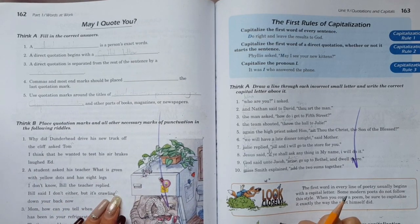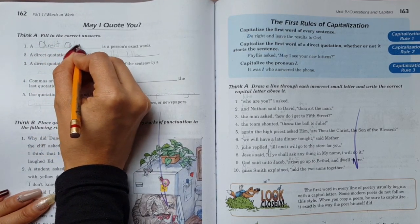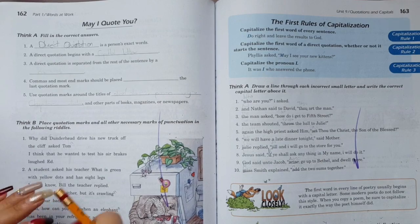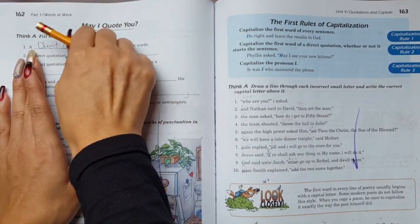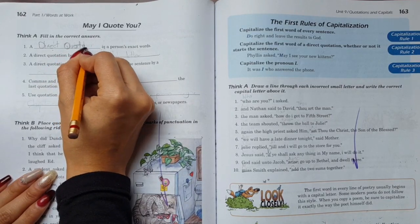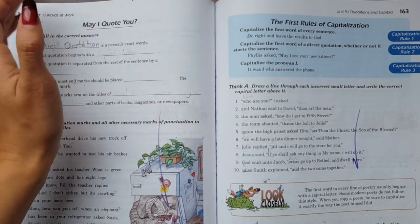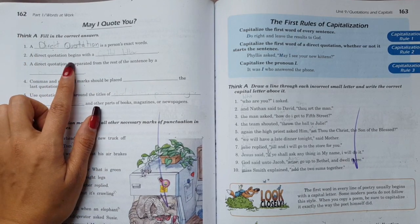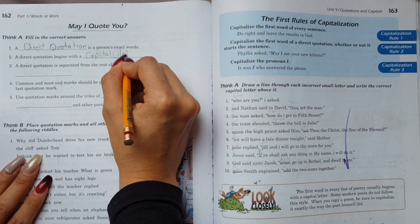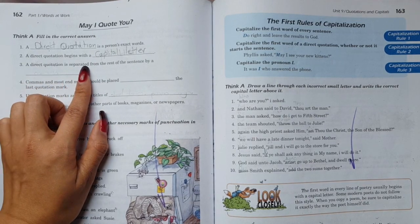Direct quotation. Say quotation. I'm going to erase just one here because this one isn't clear. So we're going to write quotation, direct quotations. Number two says a direct quotation begins with - with what does a direct quotation start? With a capital letter.